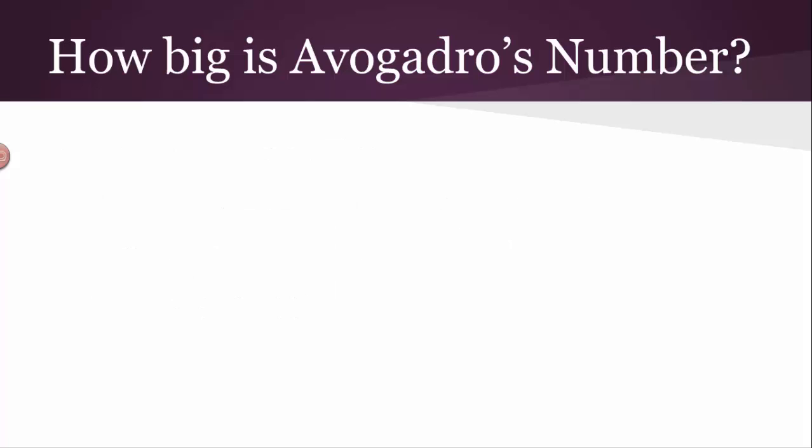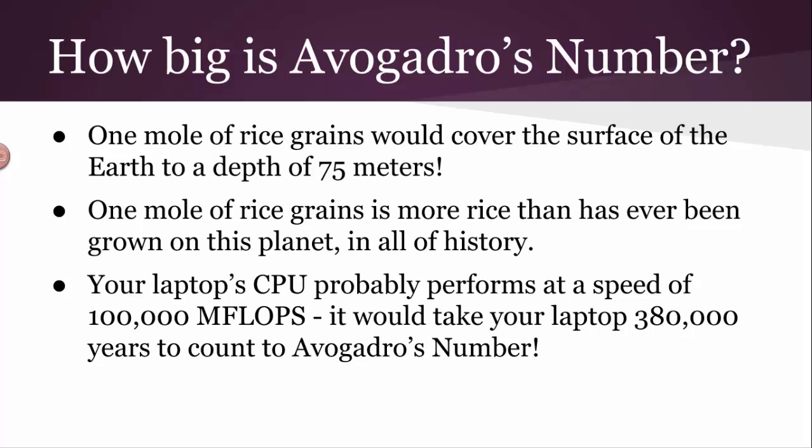Let me give you some examples of how big that number really is. If you had one mole of rice grains, 6.02 times 10 to the 23rd grains of rice, it would cover the surface of the earth to a depth of 75 meters. 75 meters is about 225 feet. That's how deep the rice would be. We'd all be crushed in rice, which would be uncomfortable, to say the least. However, that many rice grains is actually more rice than has ever been grown on this planet in all of human history. We haven't even reached that number of grains yet. That's how big the number is.